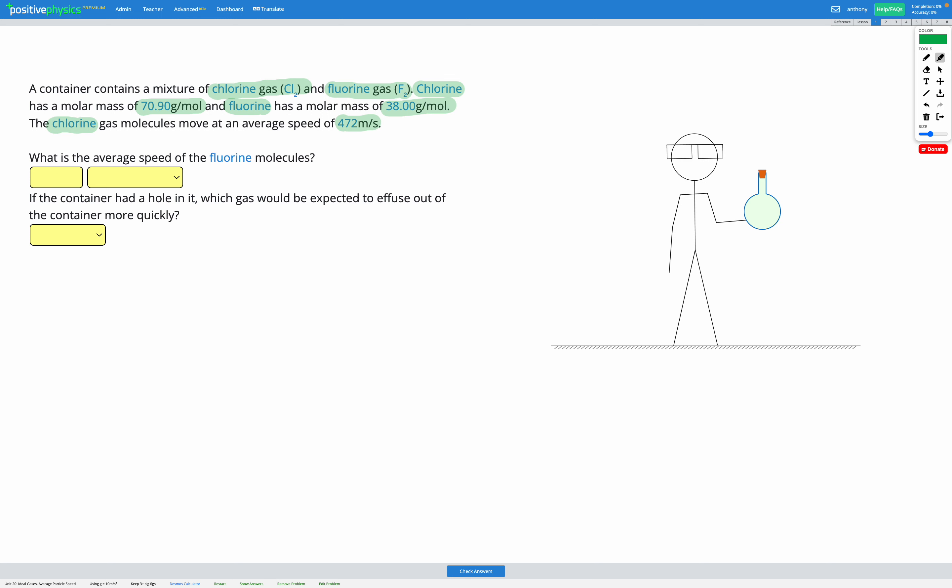Okay, our goal is to find the average speed of the fluorine molecules. So let's write down our known variables. For chlorine, we know the molar mass is 70.90 grams per mole, and we also know the speed V is 472 meters per second.